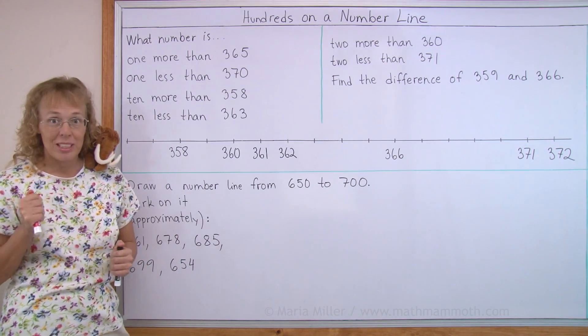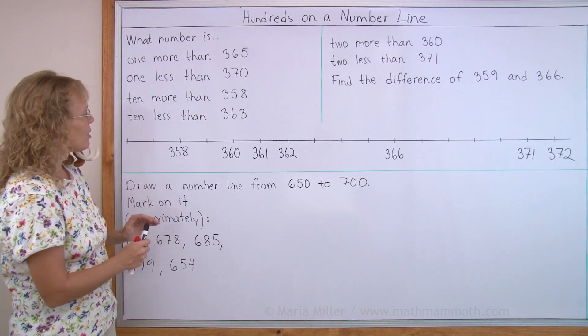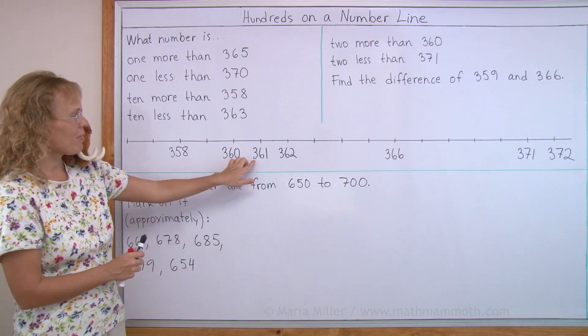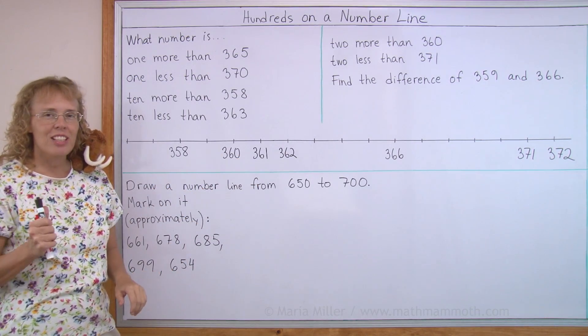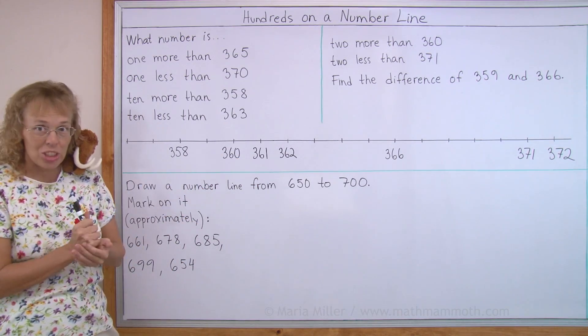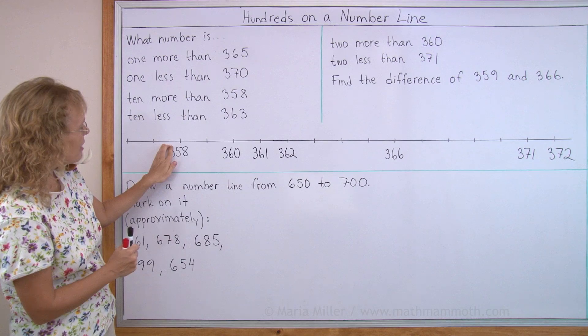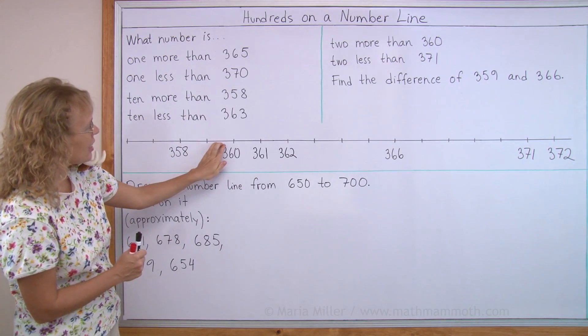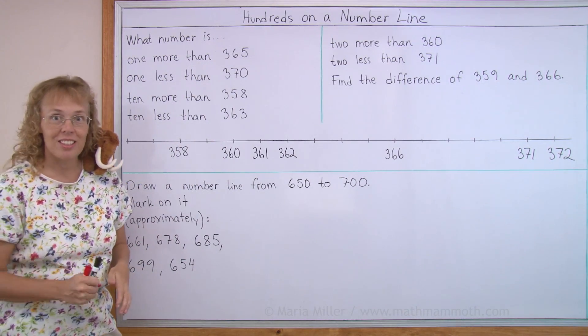And it is actually pretty easy. When you look at these numbers, they have 300 something. And so you can just fill in the number line thinking of your two digit numbers, like here 58, like here 60, and then just putting the 300 in front of that.